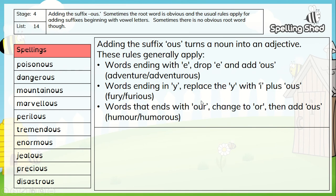And words that end in R, you change to OR and then add the O-U-S suffix. So humour — you drop the R, add OR, and then add the suffix O-U-S. And we know that adding the suffix O-U-S turns a noun into an adjective, a describing word.